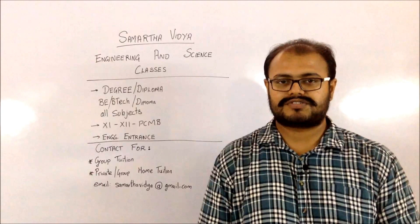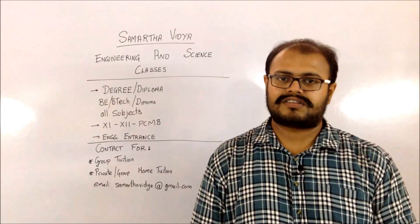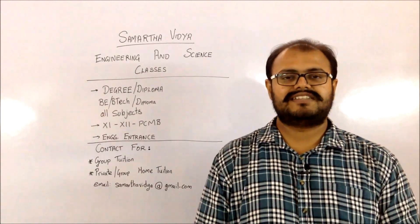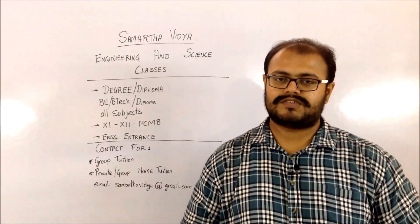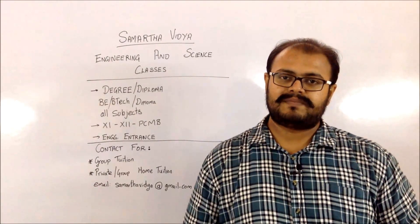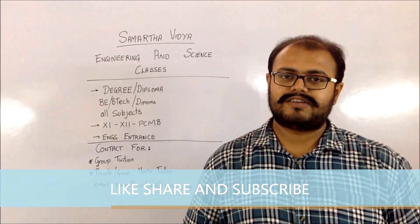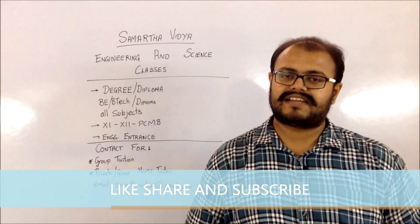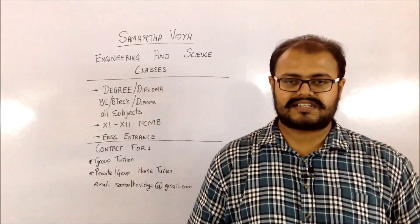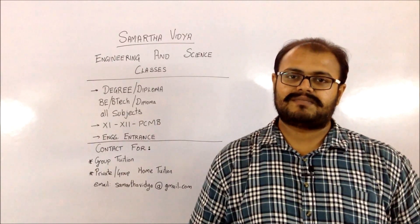These are some of the points you should consider while filling up your option forms. It is advisable to start working on the option form from today itself — first shortlist the fields you want to opt for, then the institutes, make a list of all those institutes, and then you will be ready for filling up the option forms. Also, if possible, try to get the cutoffs for those institutes so you get a rough idea of whether there is a chance of getting in. We will be sharing more information on the various CAP rounds and more on the option forms and what to consider while filling them.